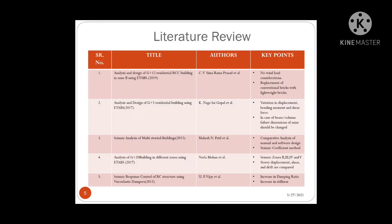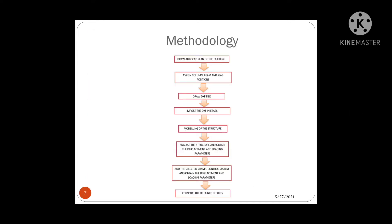This is the literature that we have reviewed for our project. In the next slide for methodology, we have first drawn a floor plan for our building in E-Tabs and then prepared a DXF file after assigning the beam and column positions and imported the same to E-Tabs. After defining and assigning the materials and sections, we have first analyzed the structure without dampers and then the same after the application of dampers. We have compared the results and concluded by how dampers are effective under seismic loading.